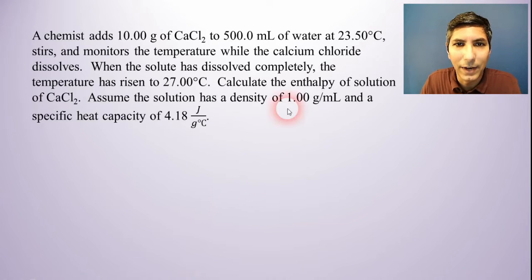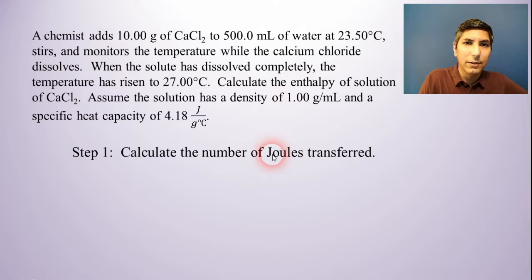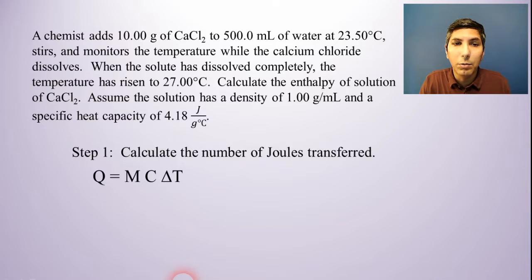The problem is asking us to find the enthalpy of solution. Enthalpy of solution, enthalpy of reaction, change in enthalpy, that's always going to be kilojoules per mole. So that implies I have to have two calculations. I have to find kilojoules and I have to find the moles. Let's find the joules first. We'll do the joules and kilojoules part first. In order to do that, I use q = mc∆T, just like we learned in our earlier video. We're going to solve for q so we can see how many joules were transferred.